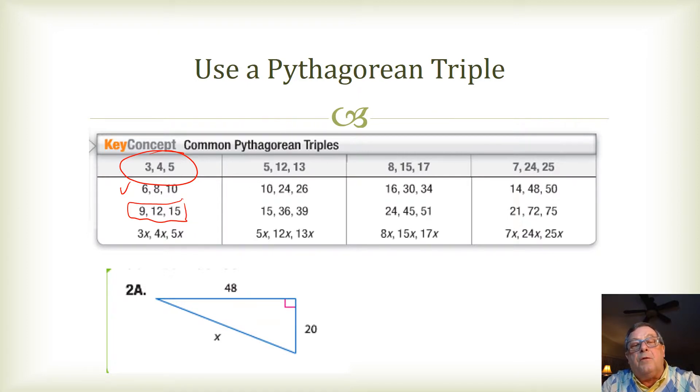And so, the common Pythagorean triples are 3, 4, 5, 5, 12, 13, 8, 15, 17, and 7, 24, 25.